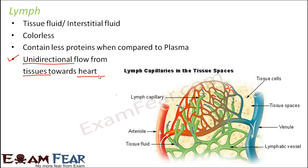So lymph only transports materials from different tissues of the body towards the heart. Now the question is: what is the purpose of lymph? Does it perform any specific function, or is it just leaked-out plasma with a new name? It is not like that. Lymph actually has a network of vessels very similar to the way blood has arteries, veins, and capillaries. Similarly, the lymph has a complete lymphatic system with specialized vessels to carry it, and lymph also serves a special purpose.